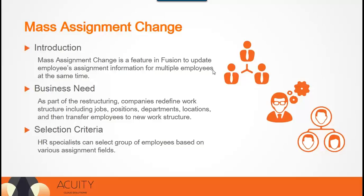Companies can use the Mass Assignment Change feature in Fusion to update employees' assignment information for multiple employees at the same time. This feature is a permission-based tool. HR specialists or business users can select a group of employees based on various assignment fields and then make a single mass update to the employee's information — such as locations, departments, or positions. It's the quickest way to update thousands of employee assignment records in just a few minutes.